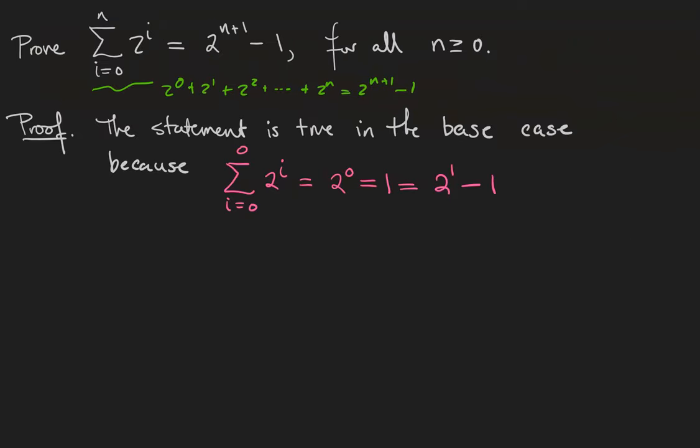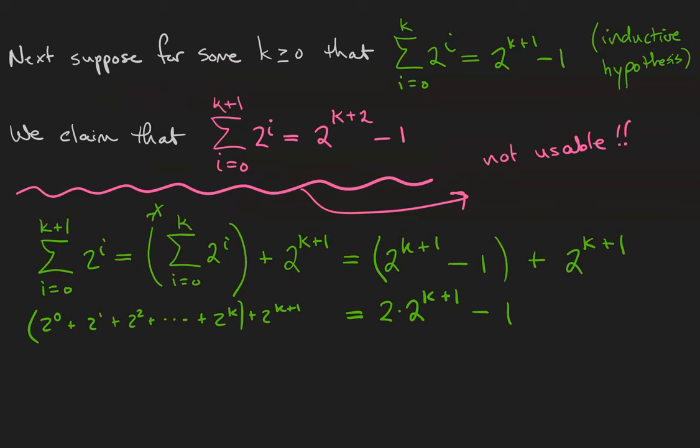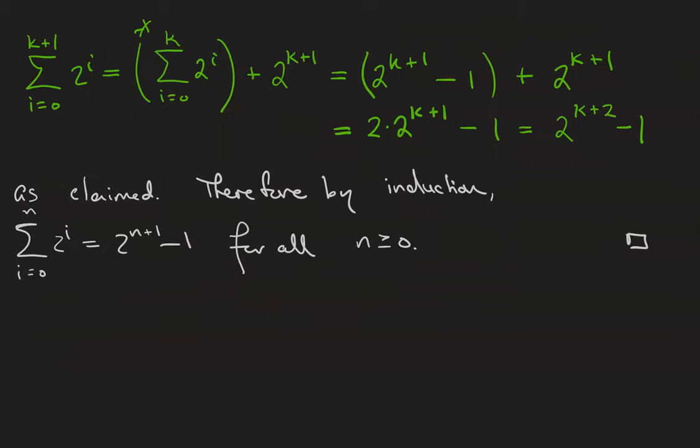So let's take a look back over the proof to make sure that we know what we just proved. First of all, we proved that the base case was true, that the statement is true whenever n is equal to 0. Next, we assumed that the statement was true for some arbitrary integer k in the appropriate range and showed that it must also be true for k+1. Therefore, by induction, the sum from i=0 to n of 2^i is equal to 2^(n+1) - 1 as long as n is at least 0.